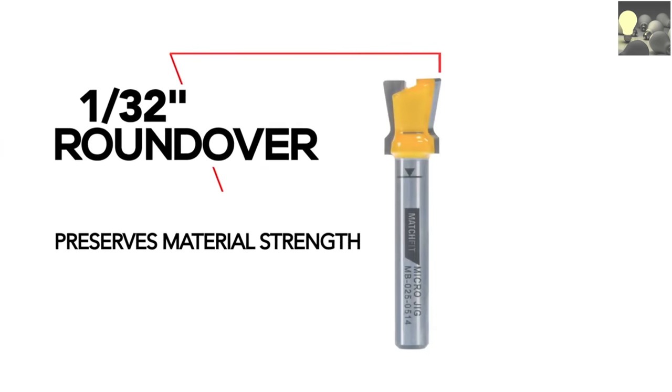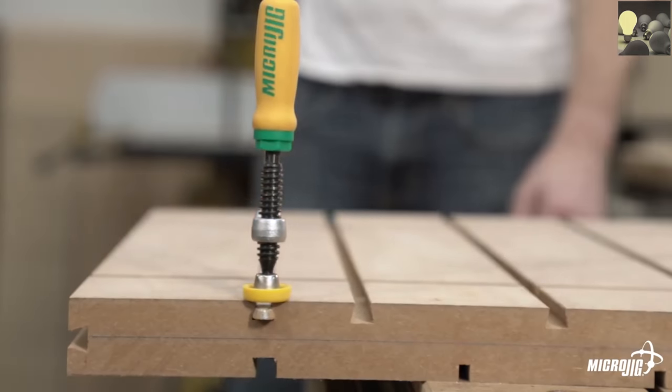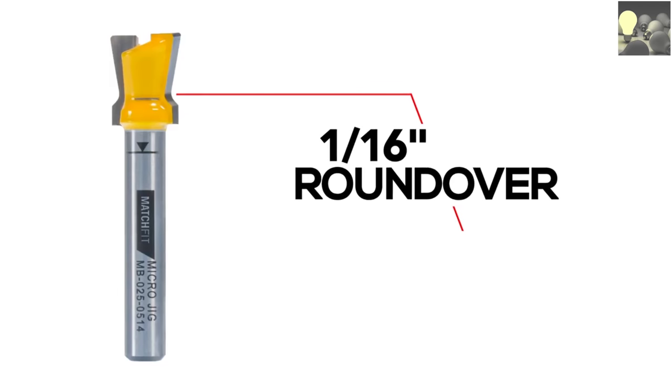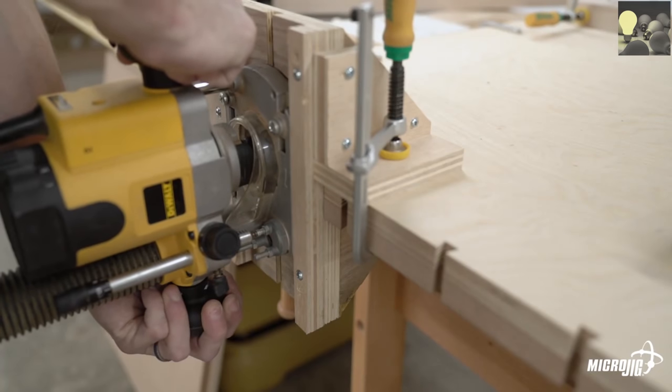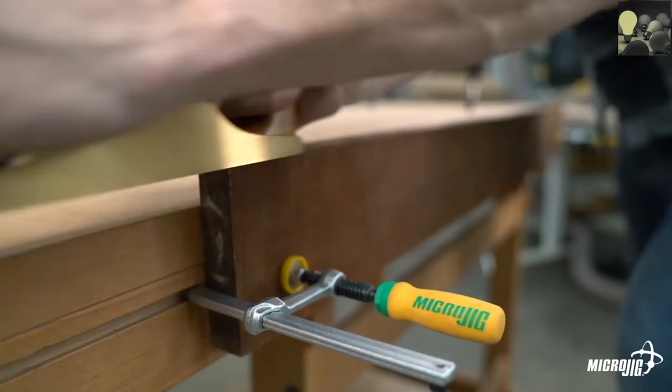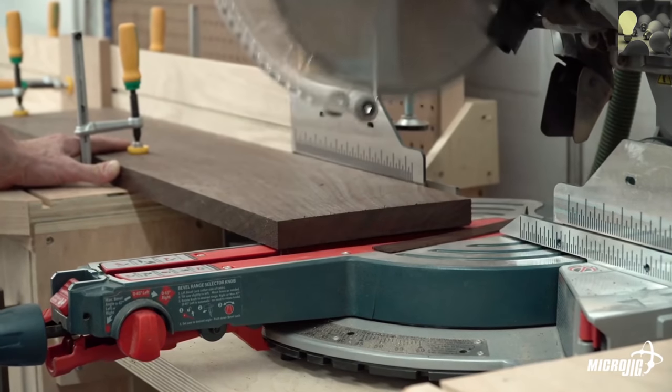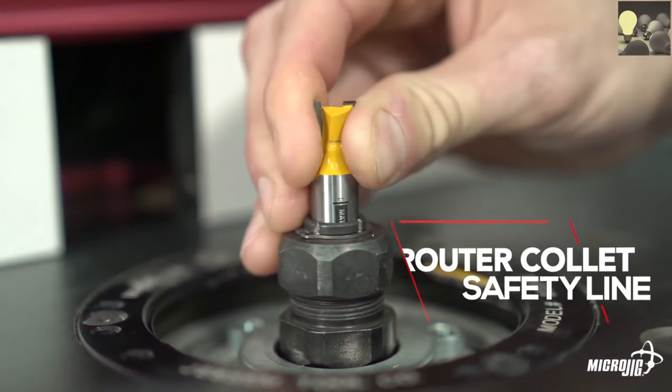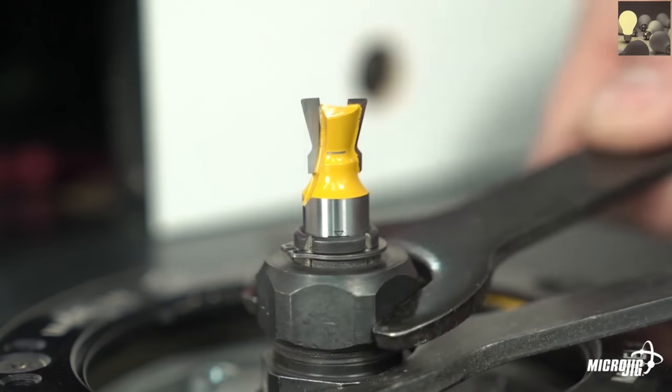The 1/32 inch roundover strengthens that bottom corner by removing less material. The 1/16 inch roundover at the top of the dovetail groove prevents tear out and fuzz, which means less time sanding and more time building.